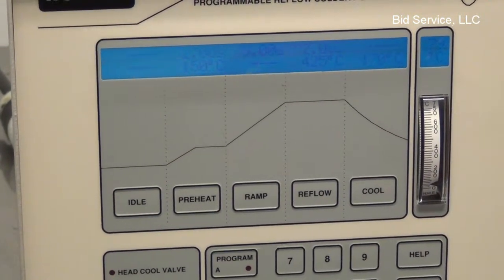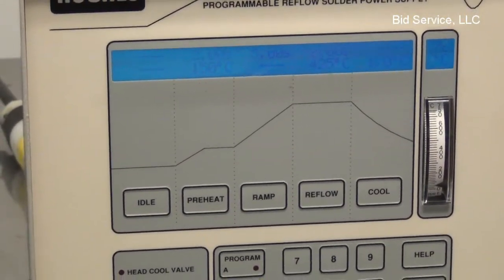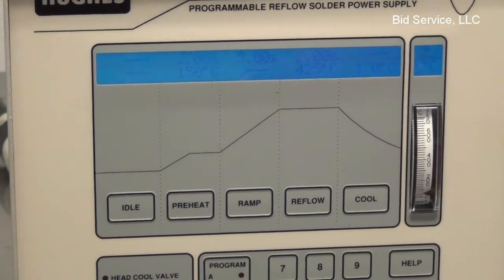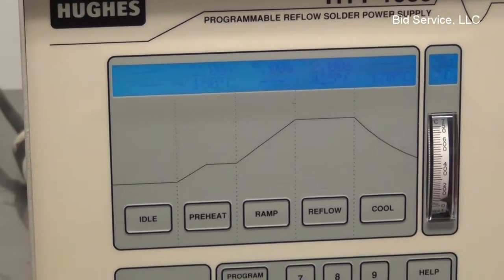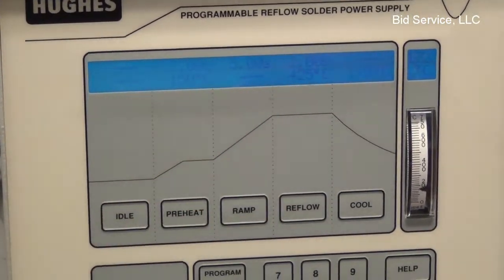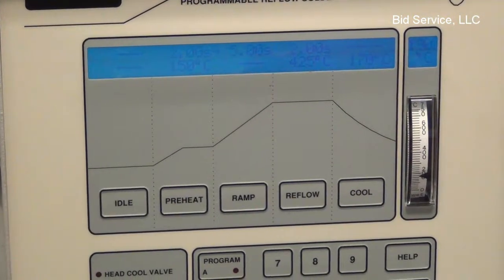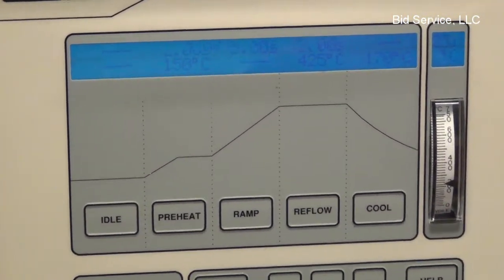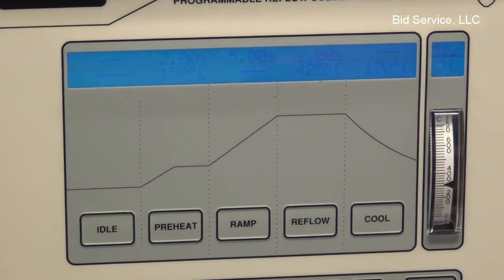So what I'll do is I'll hit my fire switch down here and keep it pressed down. And it'll begin to program. And you can see by the arrow here, we did a two second preheat. Now it's in a five second ramp up. It's going to ramp to 425.